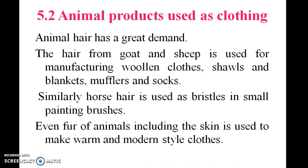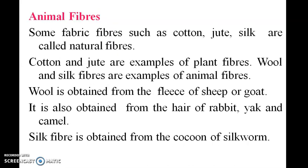Animal products are also used as clothing. Animal products like wool from sheep are used to make cloth, blankets, mufflers, and socks. Animal fabrics are very different from plant-based fabrics. Cotton and jute are examples of plant fibers, while wool and silk are examples of animal fibers.